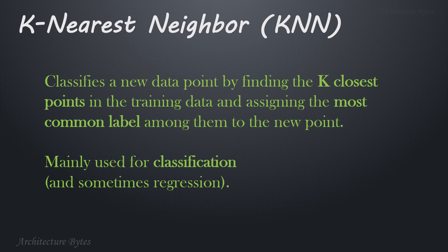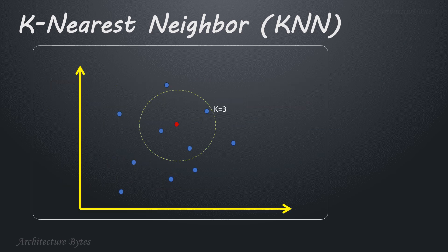K-nearest neighbor or KNN classifies new data points by finding the k closest points in the training data and assigning the most common label among them to the new point. It is mainly used for classifications and sometimes regression. So k represents the number of closest data points or neighbors to include. In this case k is 3, so three closest data points are considered and the most common label amongst these three data points is assigned to the new data point, or it is simply the average of its k nearest neighbors.